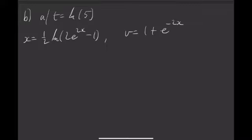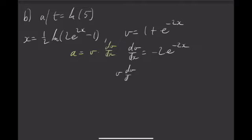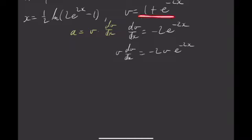But we want acceleration and we can use our formula sheet to see that acceleration is v dv/dx. And we know v. So I can say I can find dv/dx. And dv/dx is negative 2e to negative 2x. And then I can find v dv/dx. And that's just negative 2v e to the negative 2x. And then I can sub this into there.